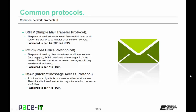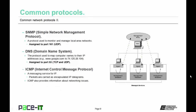Internet Message Access Protocol, or IMAP, is a protocol also used by clients to access email on email servers. It allows the client to administer and organize email on the email server before it's downloaded. Many businesses and organizations use IMAP to replace POP3 for their email client needs. IMAP is assigned to port 143, and it uses TCP as its Layer 4 transport protocol.